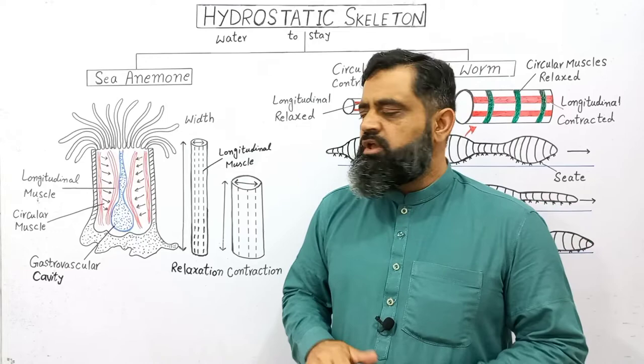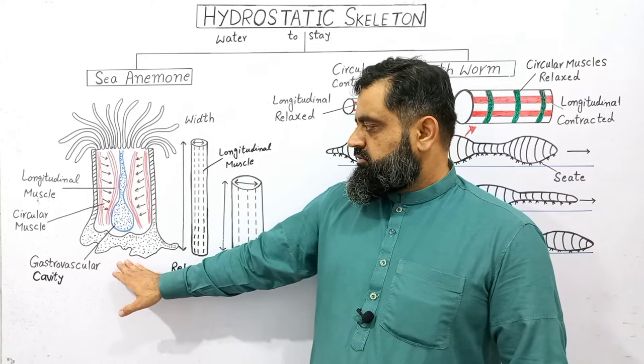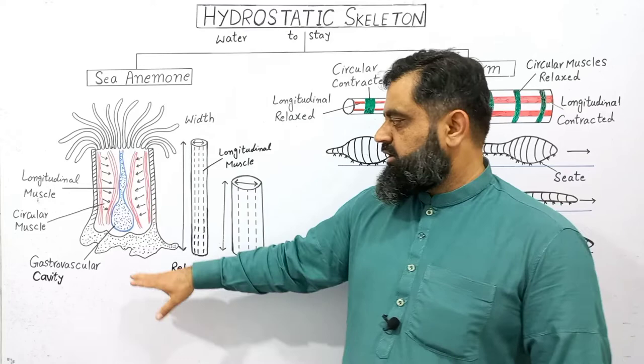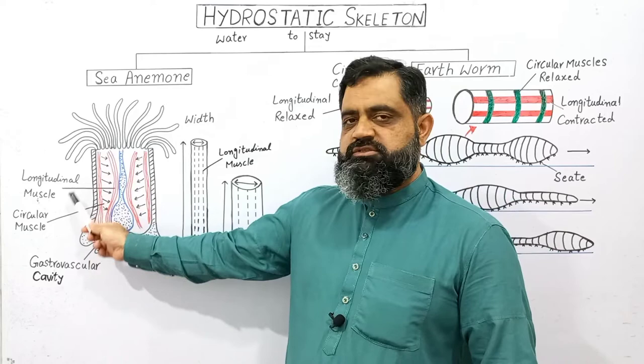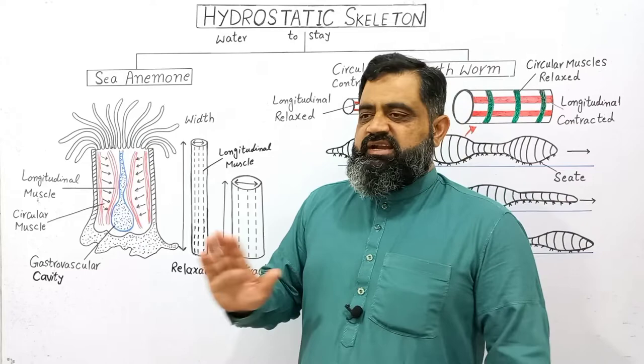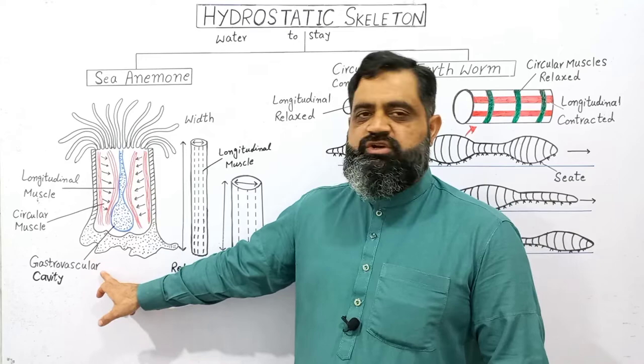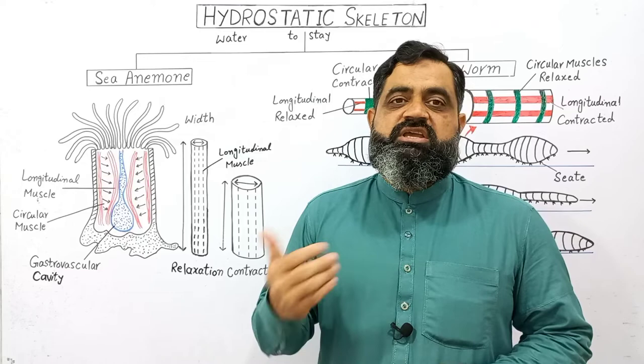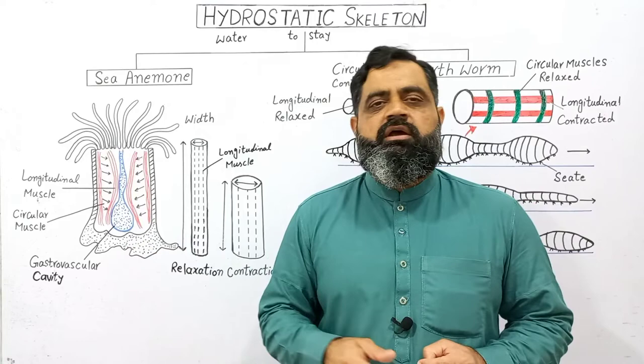Looking at a cross-section of this animal: there is a base which is attached to the substratum, and around the central body there are two types of muscles — longitudinal muscles and circular muscles — arranged along the whole length of the body. In the center of the body there is a fluid-filled cavity, known as the gastrovascular cavity. Water enters this cavity through the mouth and also leaves from it.